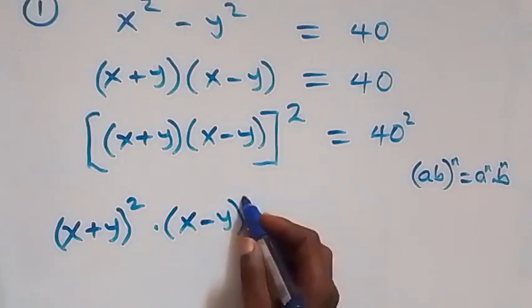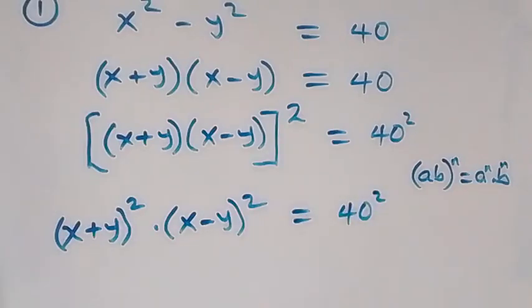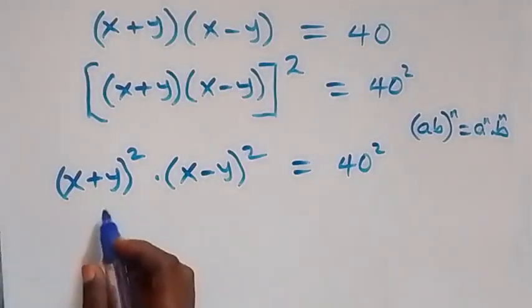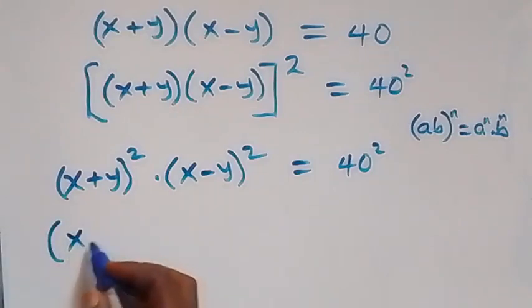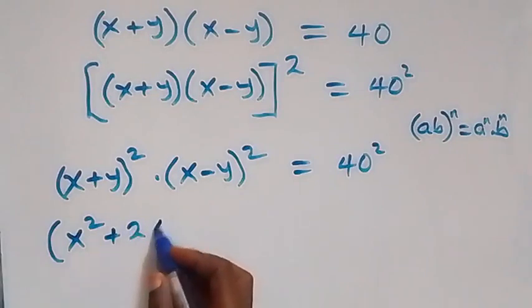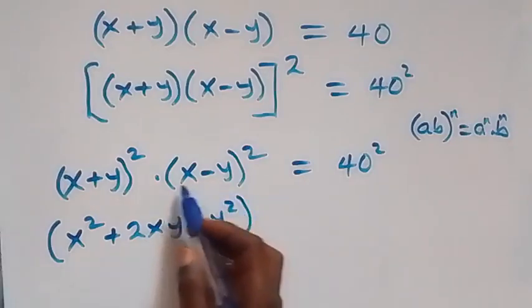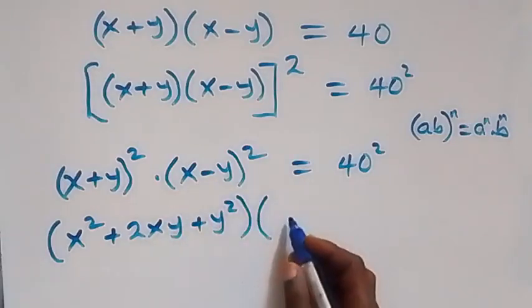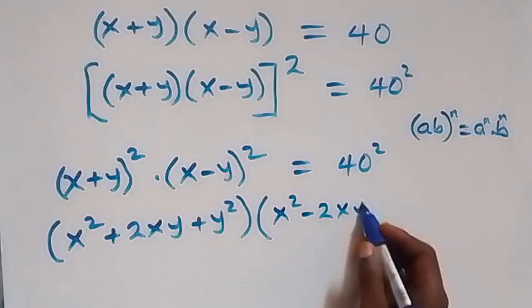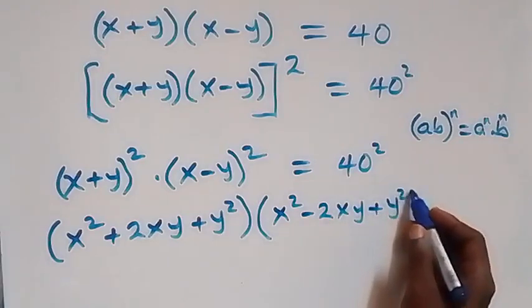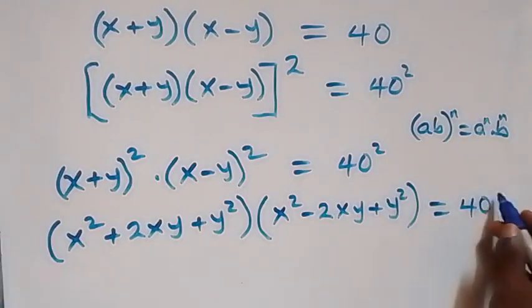Expanding the brackets: the first bracket gives us x squared plus 2xy plus y squared, and the second bracket expands to x squared minus 2xy plus y squared, all equals 40 squared.